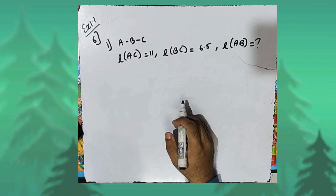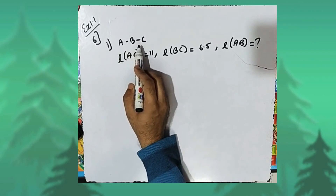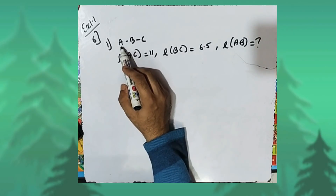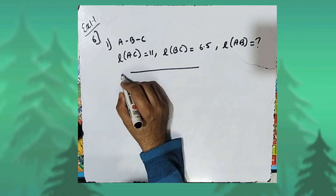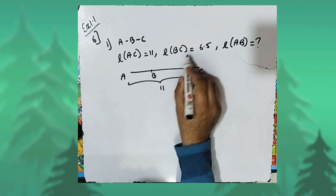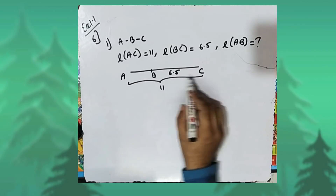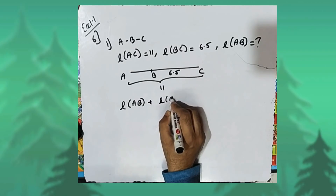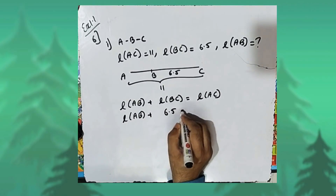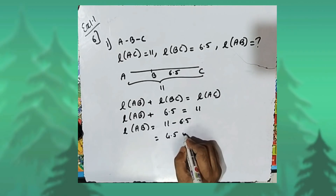In the sixth question, we sketch proper figures and find the answers. First sub-part: it is given A–B–C, meaning B is between A and C. Length AC equals eleven and length BC equals six point five; length AB is to be found. Since B is between A and C, length AB plus length BC equals length AC. So length AB plus six point five equals eleven, giving length AB equals eleven minus six point five, which is four point five units.